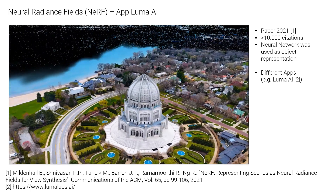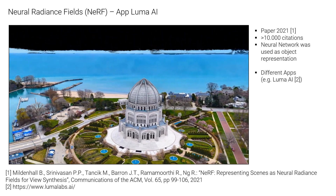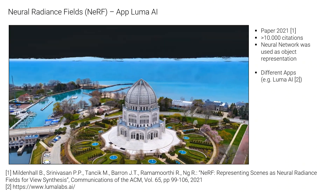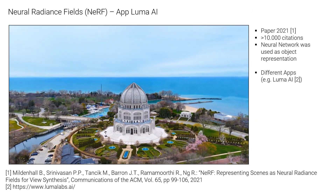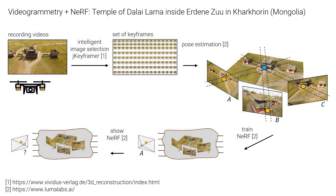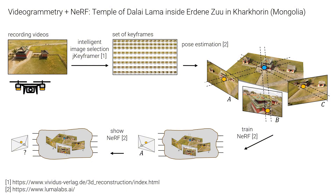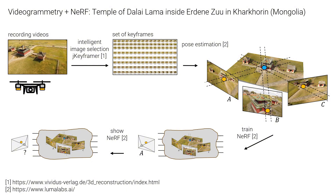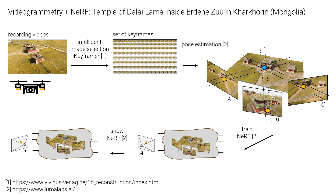Here we see a small impression of the possibilities from the Luma website. The NERF method uses the result that we have generated after the pose estimation as input data for a neural network — so there is a set of photos and the relative positioning of the images in relation to each other with respect to an object.